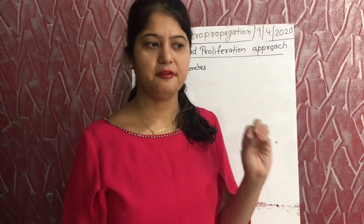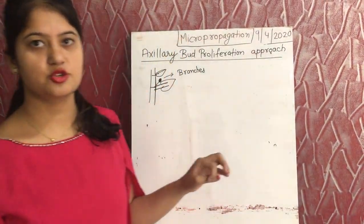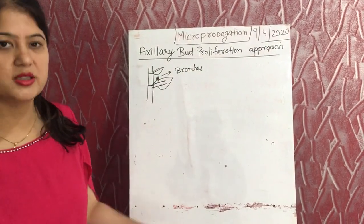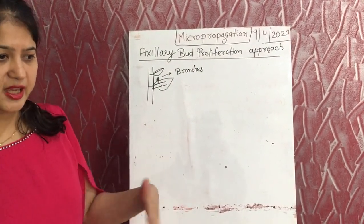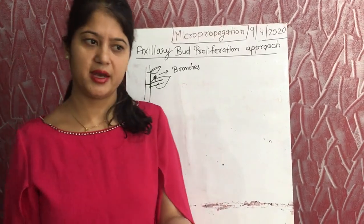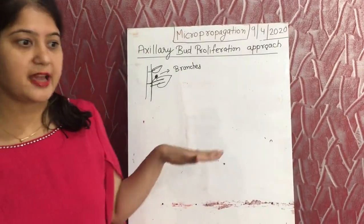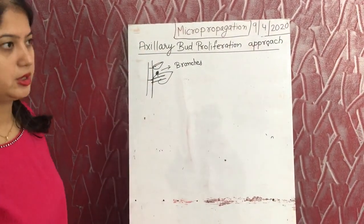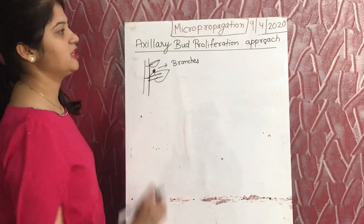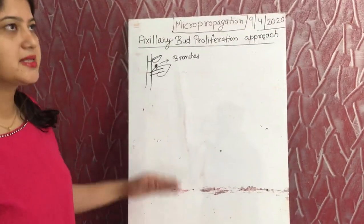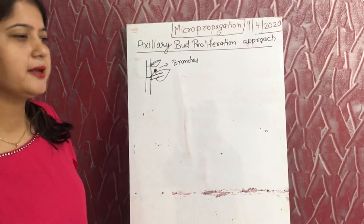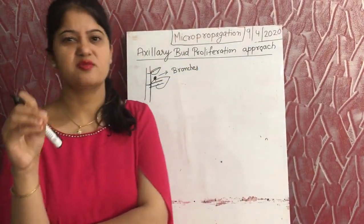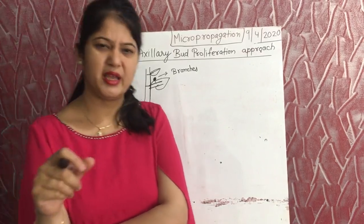The main function of cytokinin is the formation of shoots on the explant. When we give it a primary treatment with cytokinin, this axillary bud will develop into a shoot. The main advantage of using the axillary bud as an explant is that naturally — meaning in vivo conditions — it also grows into a shoot.